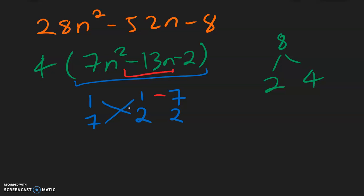And we have this negative 13 we're trying to reach. But negative 7 plus 2 is negative 5. Negative 7 minus 2 is negative 9. So this doesn't work. So let's try flipping it. We can do 1, 7, and 2, 1.